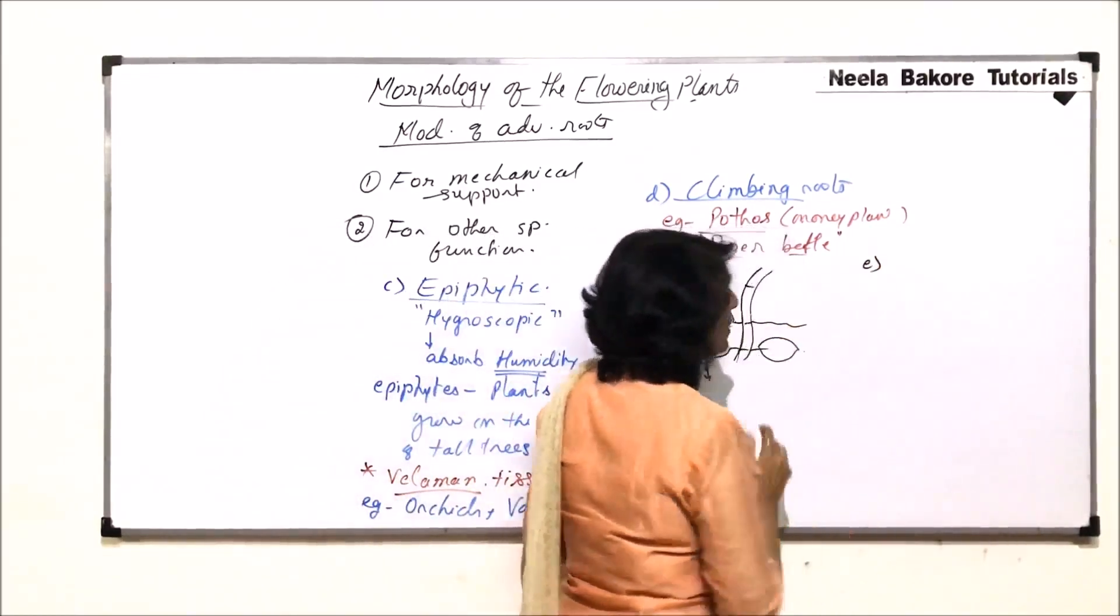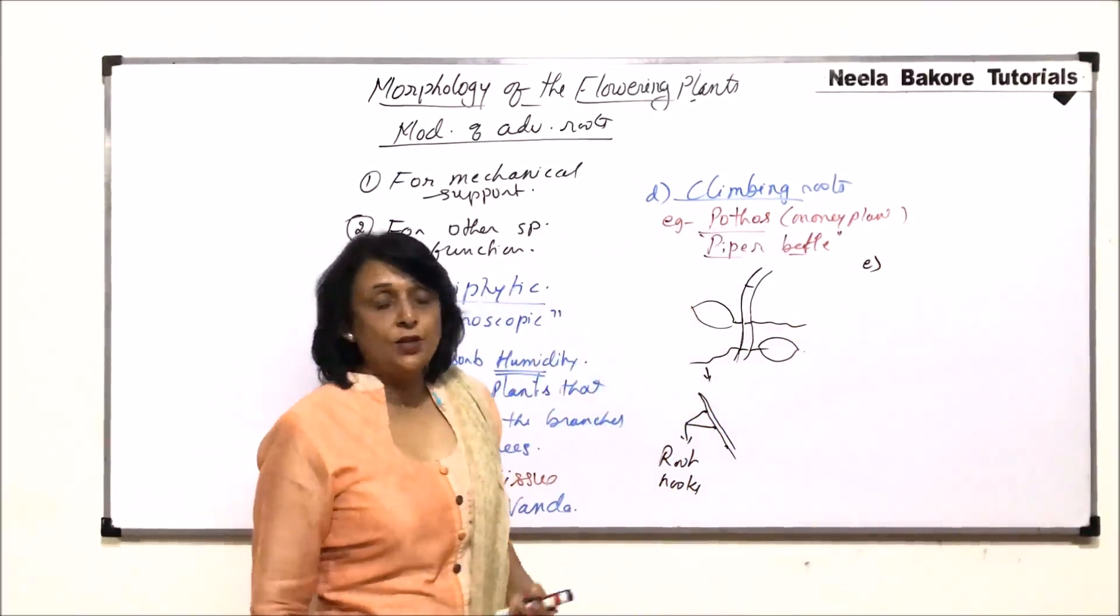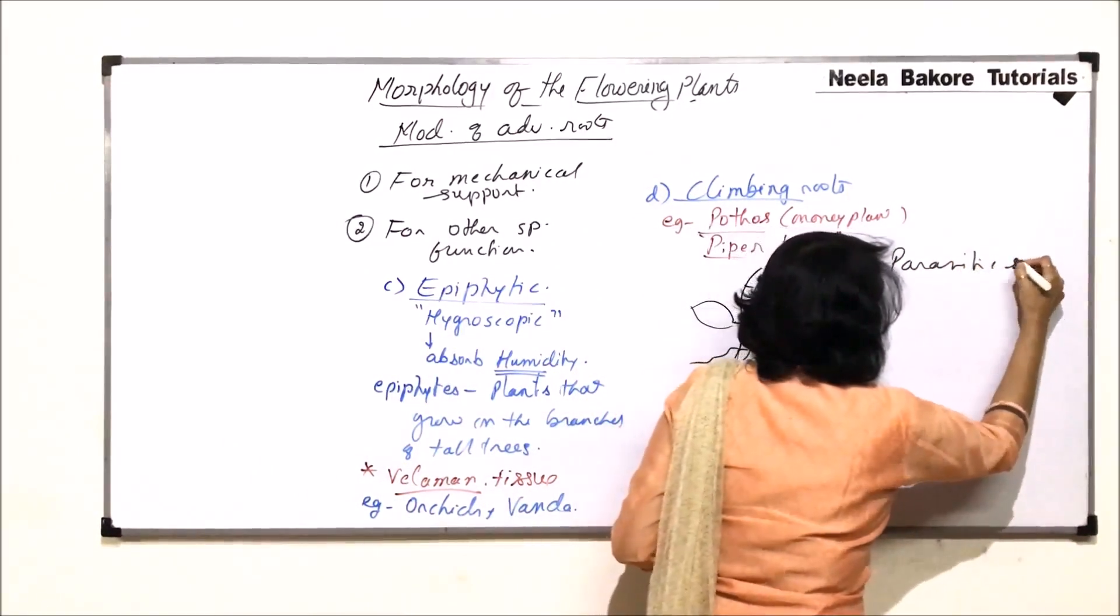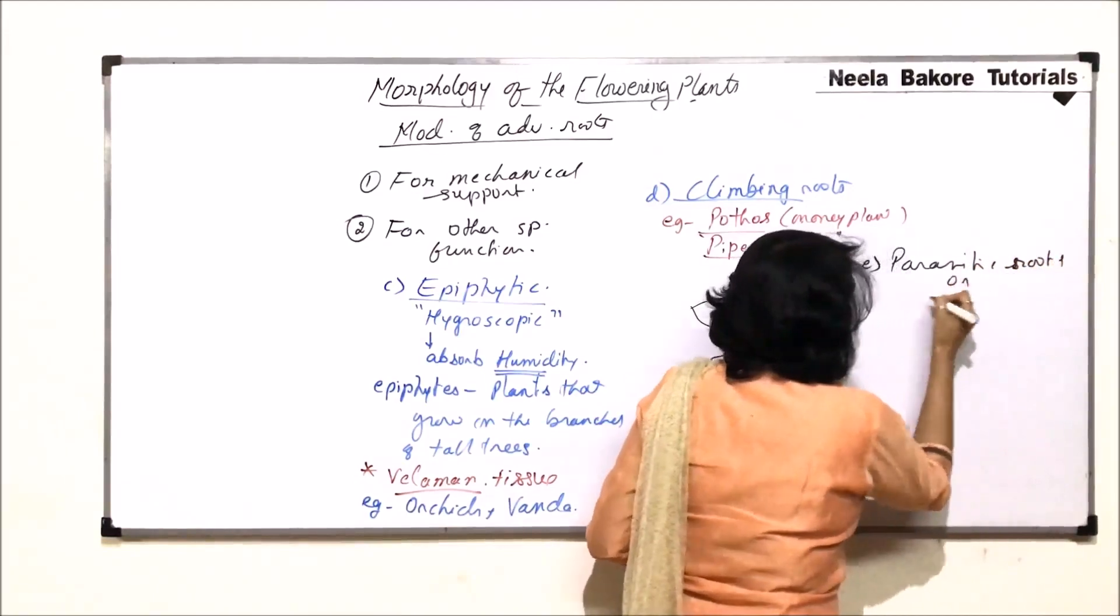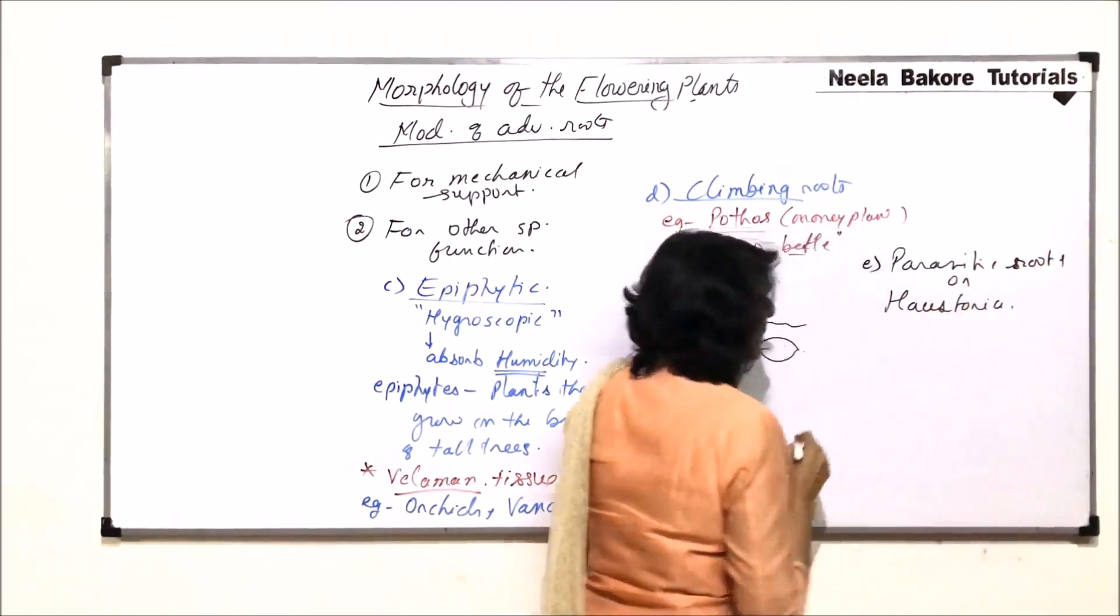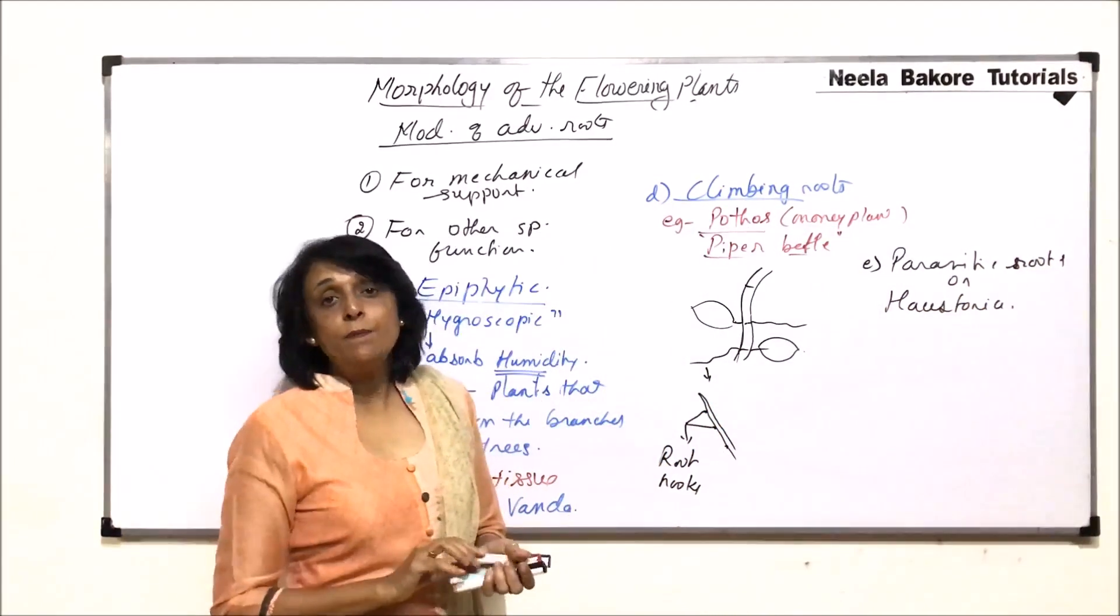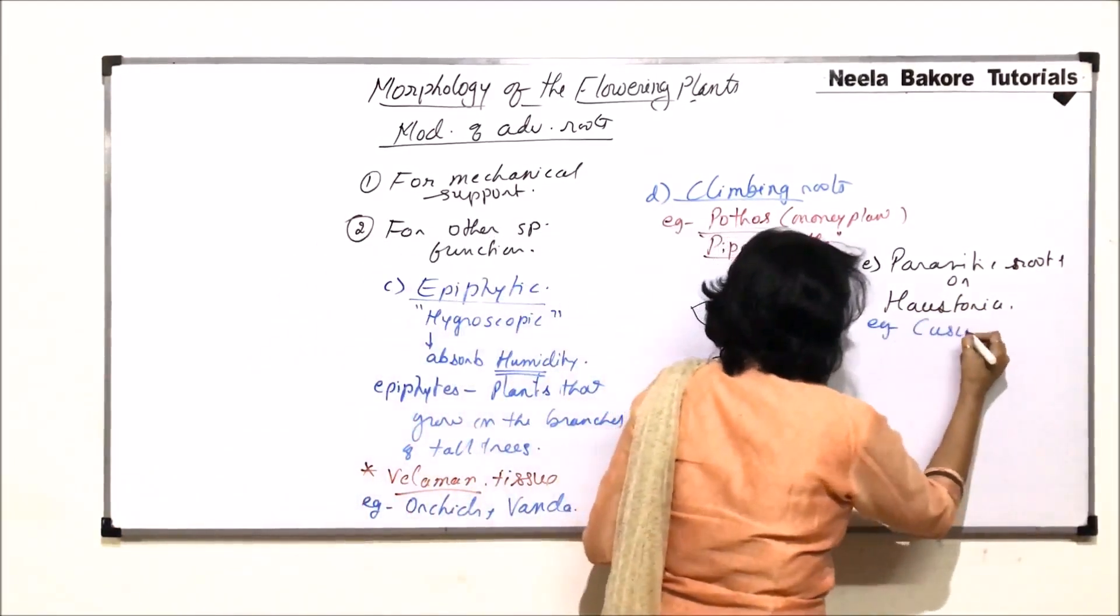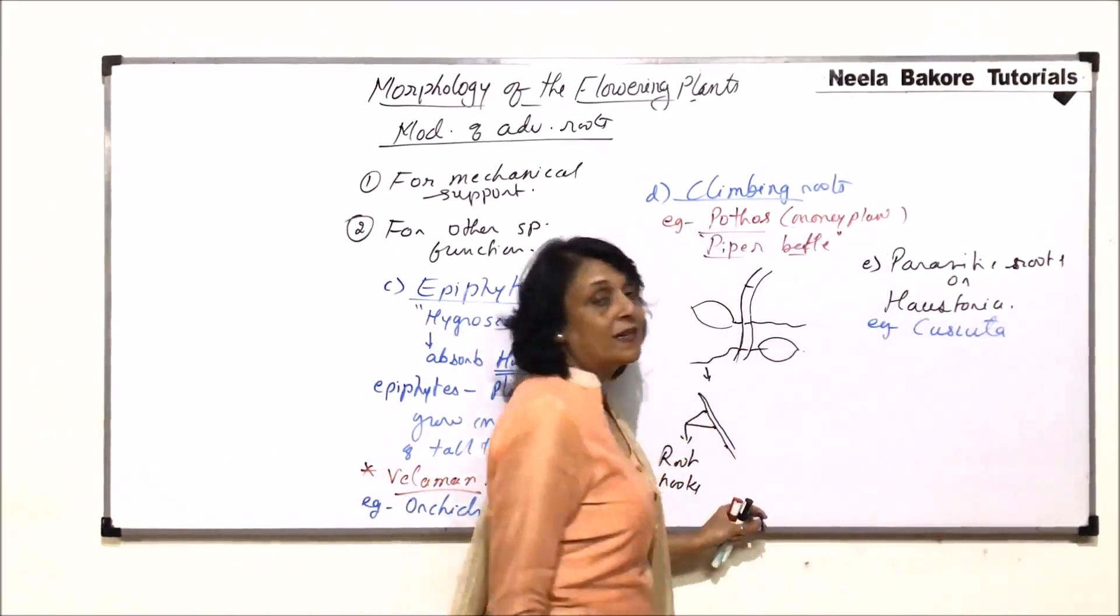The next modification, parasitic roots. Parasitic roots are also known as haustoria. And, the example that we take here is of cuscuta. It is a parasitic plant.